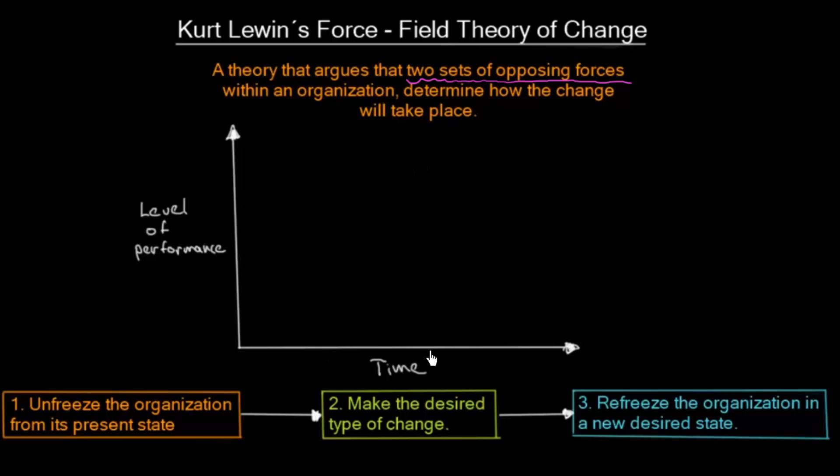So let's draw it on a simple graph. On our horizontal axis we have time, and on our vertical axis we have level of performance. So the higher we are on this axis, the better or higher is the level of performance, or you can also say efficiency. We can measure efficiency with this axis.